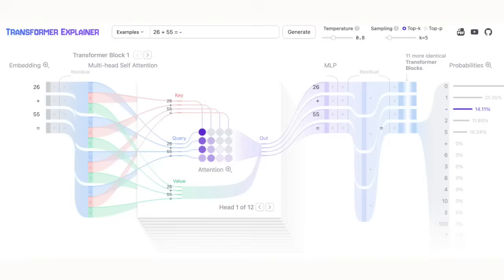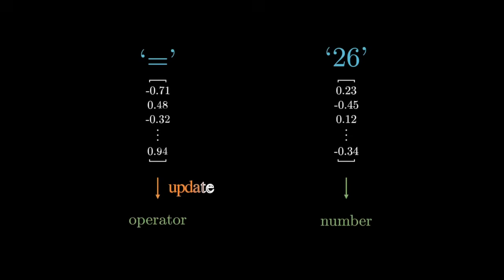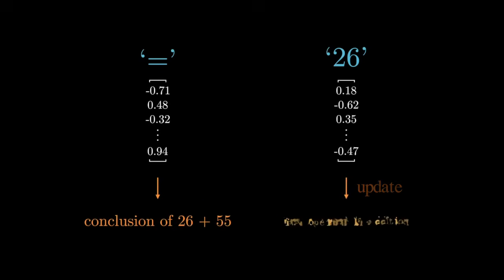The main takeaway is this query key value mixing repeats in every self-attention layer, so each token gradually refines its context. As a result, the embedding of the equal sign token shifts from a generic equal sign to one that encodes conclusion of 26 plus 55, while 26 becomes the first operand in addition.